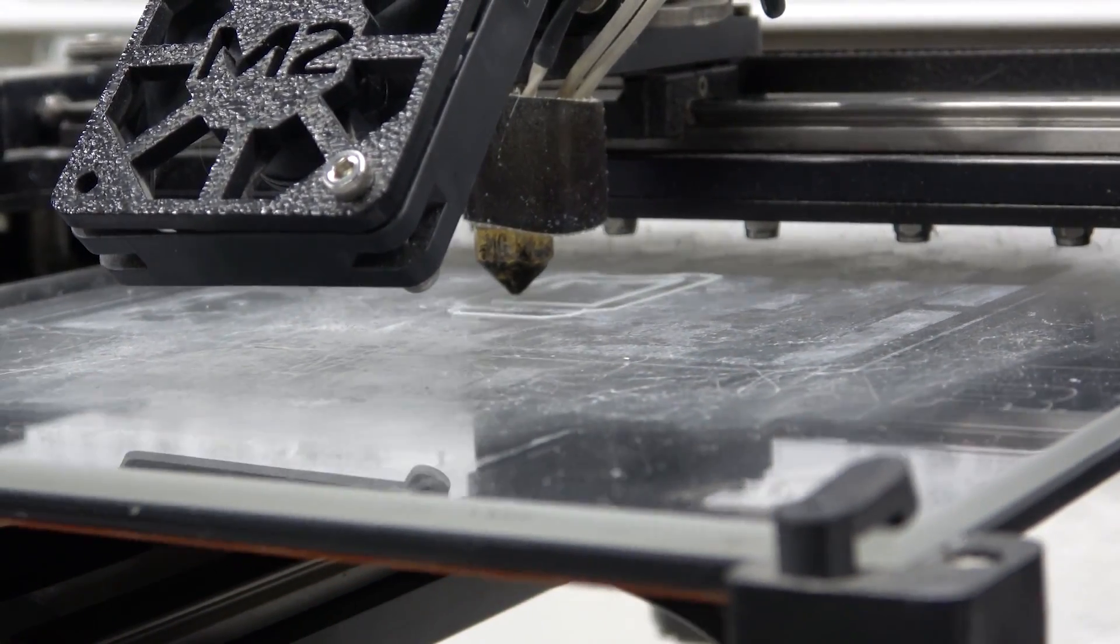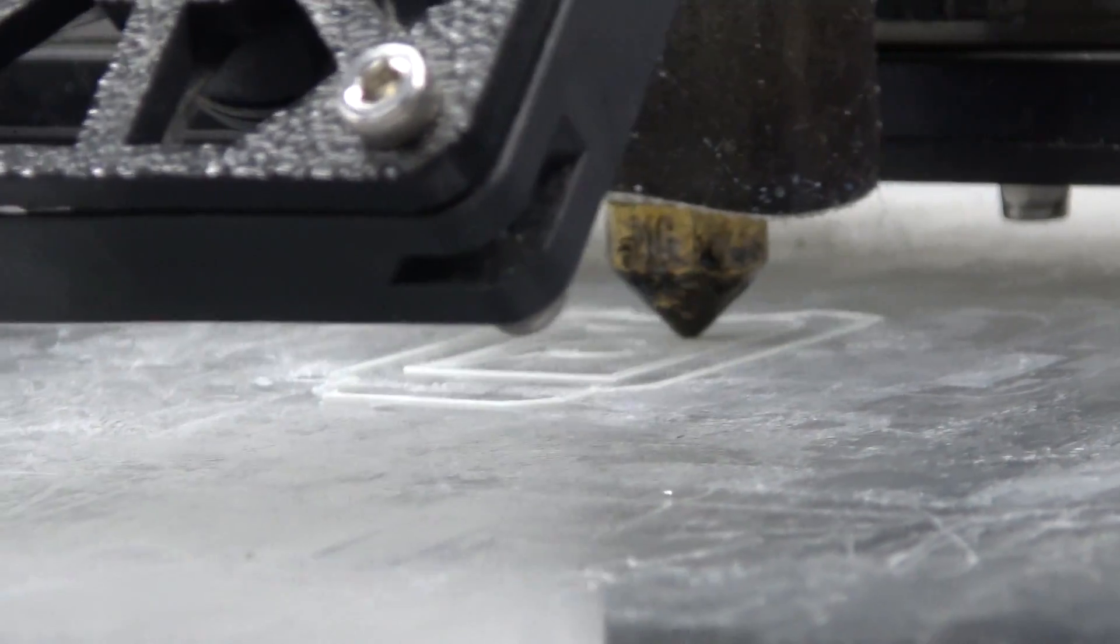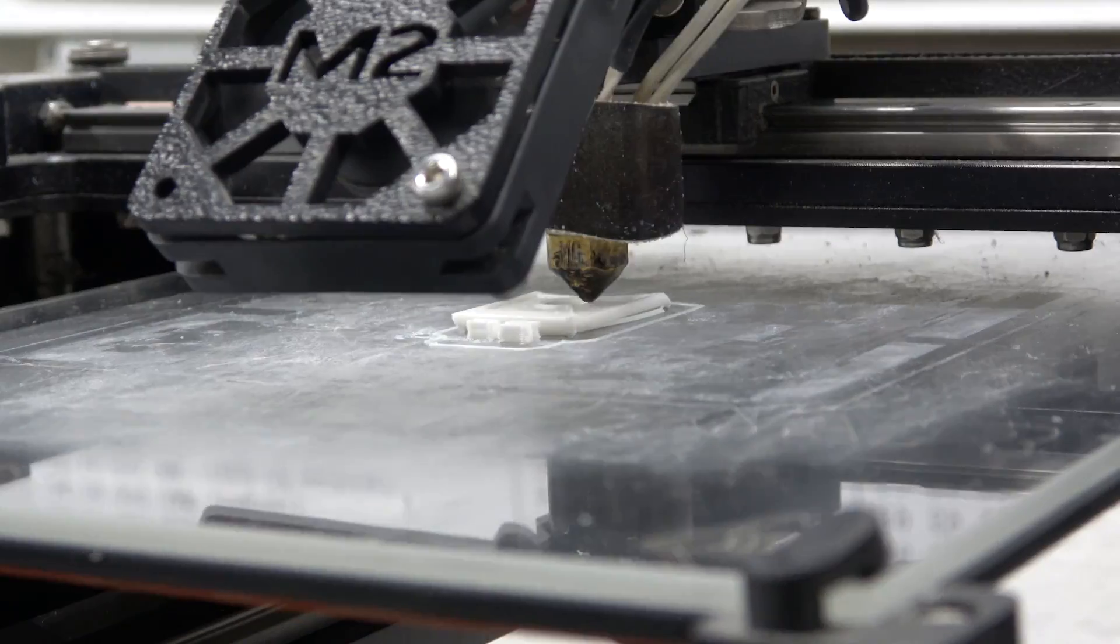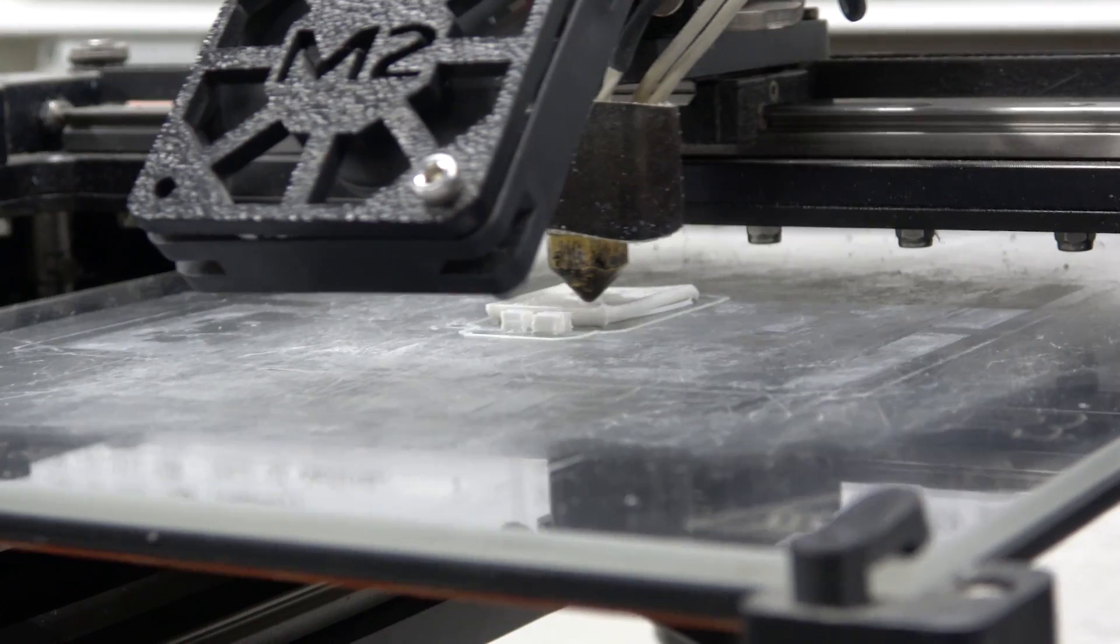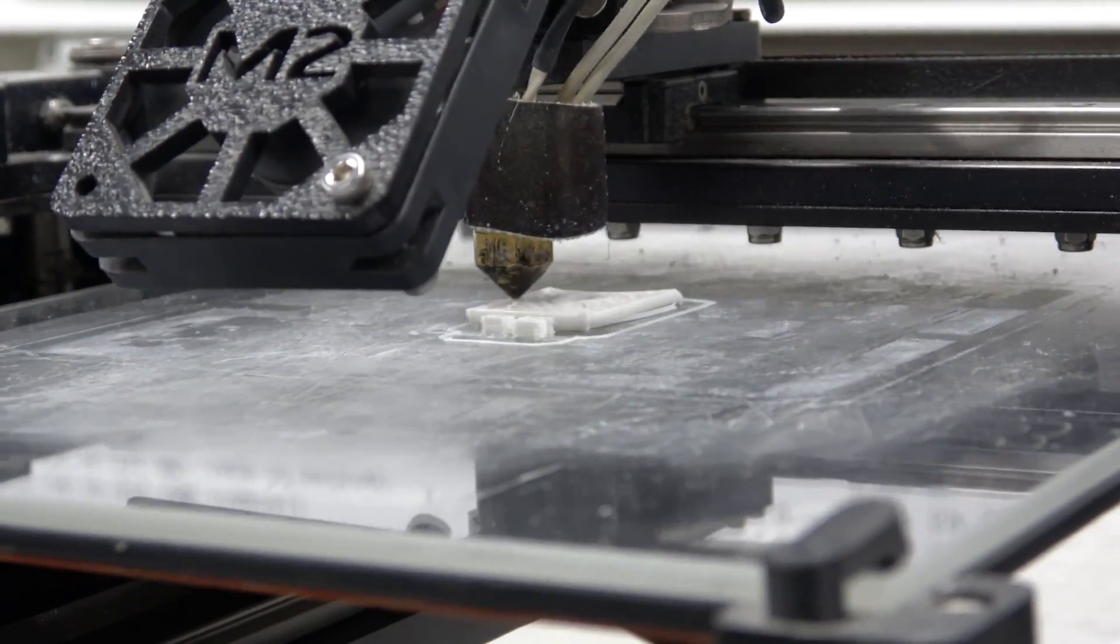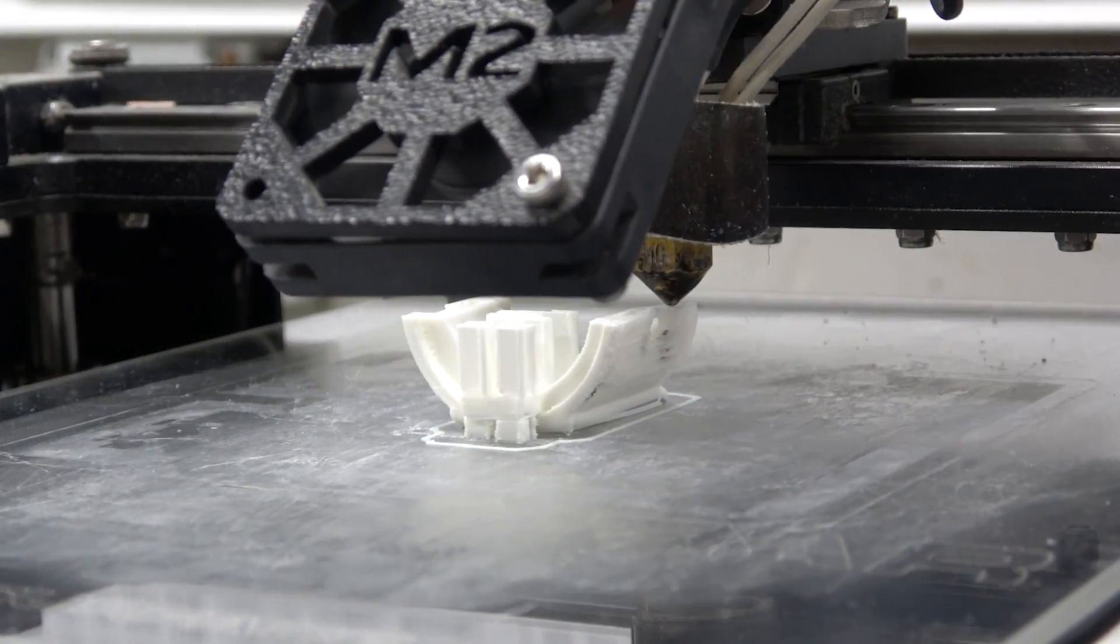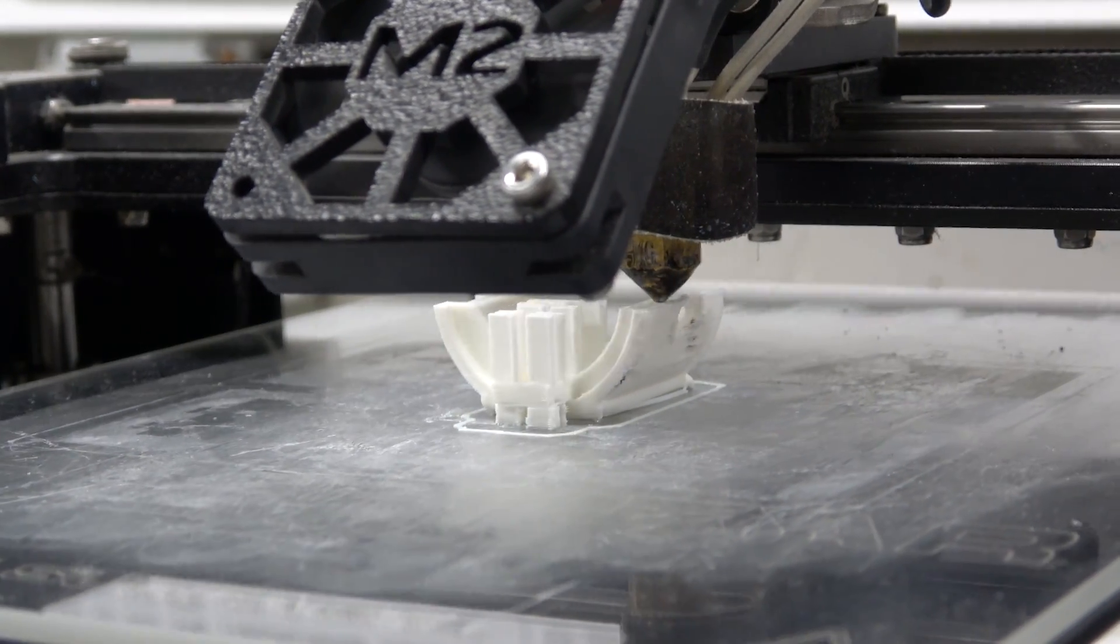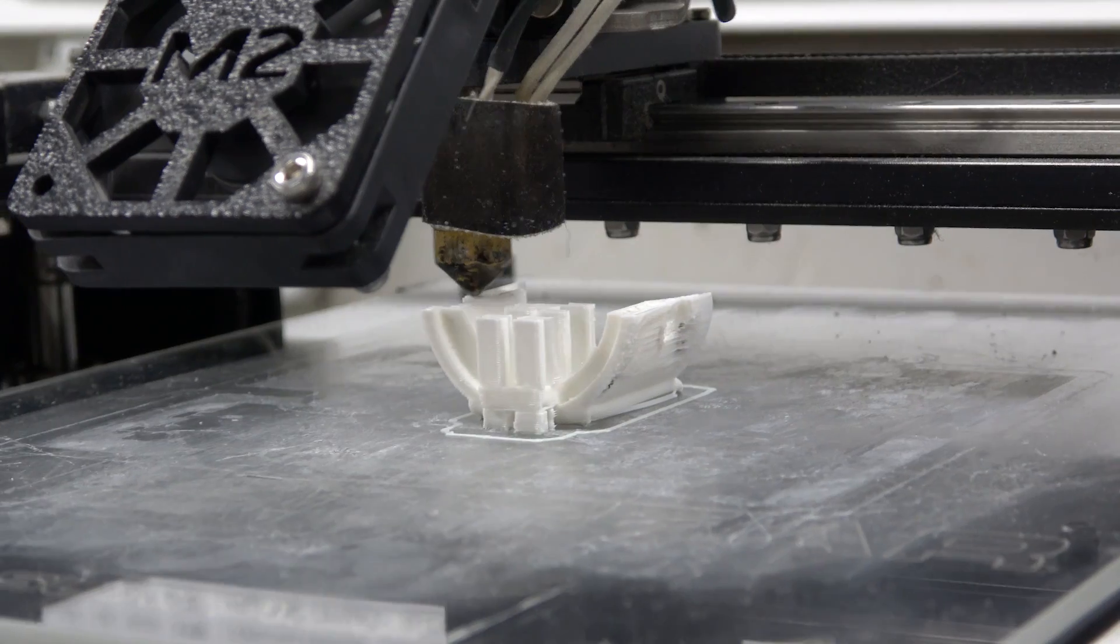First layer adhesion looks good and as we all know, or at least those of us who 3D print, first layer is really the one that matters. So far so good. This is a pretty coarse resolution print that I'm making and has a lot of support material but it's a fairly average part. Whoa we're halfway there. Whoa living on a prayer.